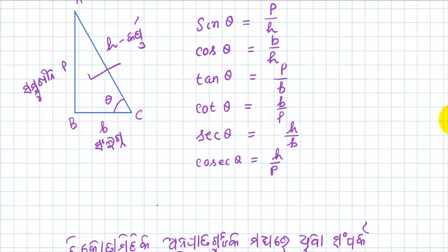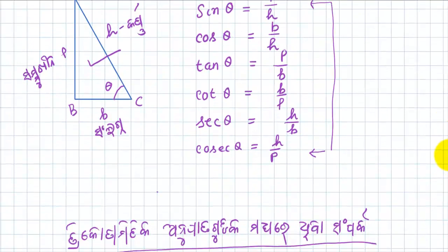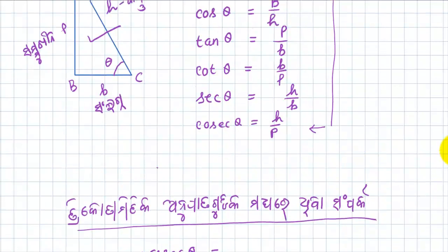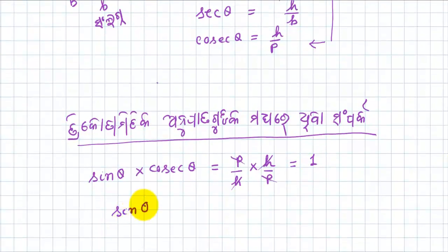Today we'll see sine theta and cosec theta. Sine theta is P by H and cosec theta is H by P. So if we write sine theta into cosec theta, sine theta becomes P by H and cosec theta is H by P. Then it becomes P by H times H by P, where P and H cancel. This equals 1. Therefore sine theta equals 1 by cosec theta, or we can say cosec theta equals 1 by sine theta.